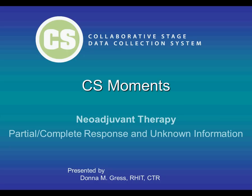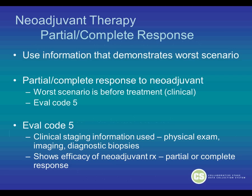This is the scenario to use if the patient had a partial or complete response to the neoadjuvant therapy but you have unknown staging information. When a patient has a partial or complete response to neoadjuvant therapy, you are always supposed to use the information that demonstrates the worst scenario. For partial or complete response to neoadjuvant therapy, the worst scenario to be coded in collaborative stage is before the treatment — the clinical stage.